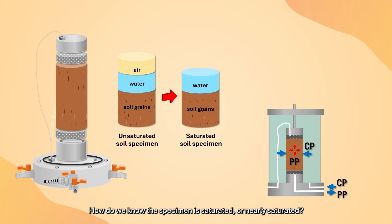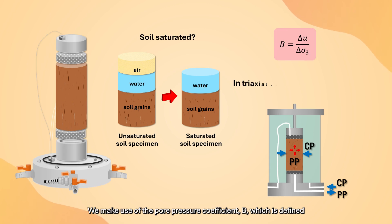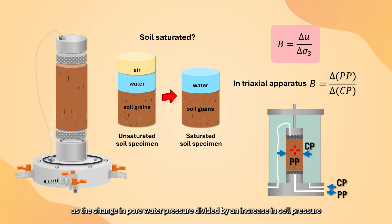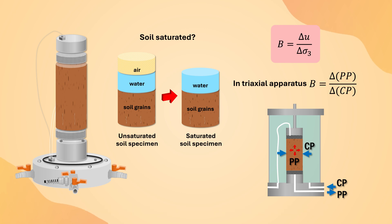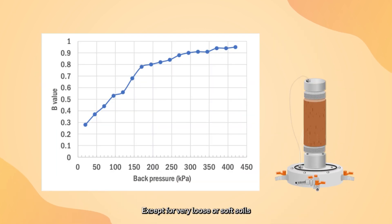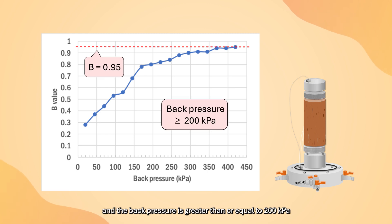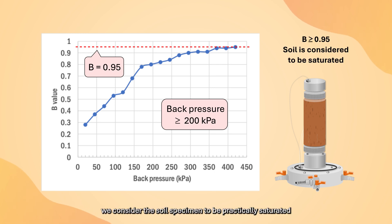How do we know the specimen is saturated or nearly saturated? We make use of the pore pressure coefficient B, defined as the change in pore water pressure divided by an increase in cell pressure. Except for very loose or soft soils, when the B value is greater than or equal to 0.95 and the back pressure is greater than or equal to 200 kPa, we consider the soil specimen to be practically saturated.